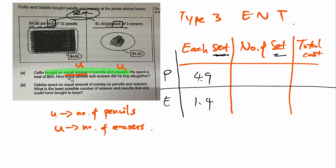What if instead of equal number, the question said pencils to erasers is 2 to 1? Then pencils would become 2U and the number of erasers would be 1U. Correct.